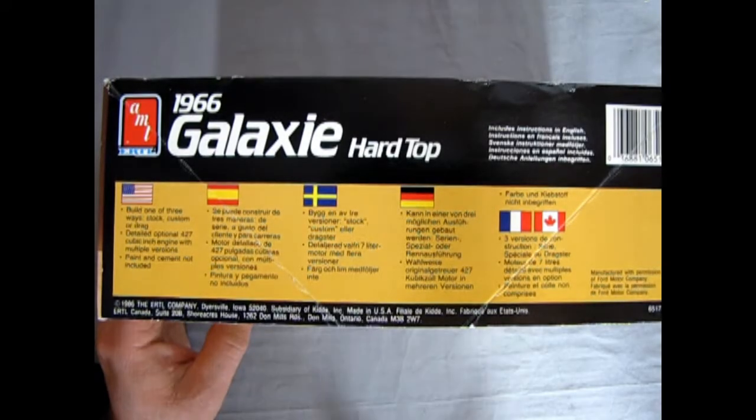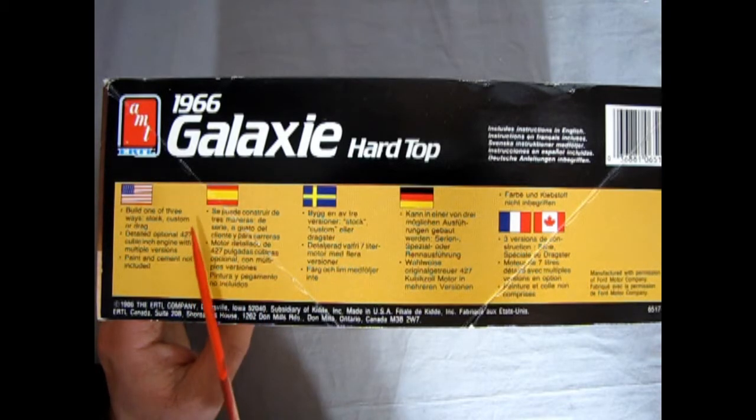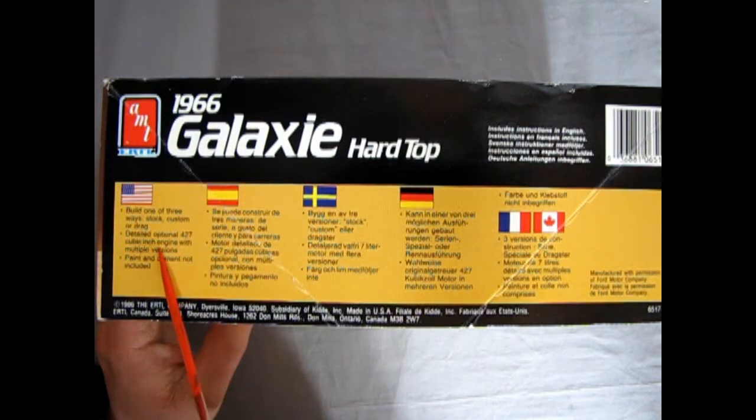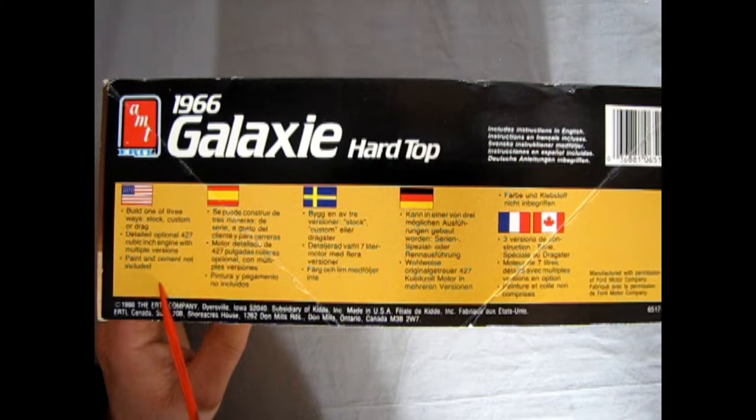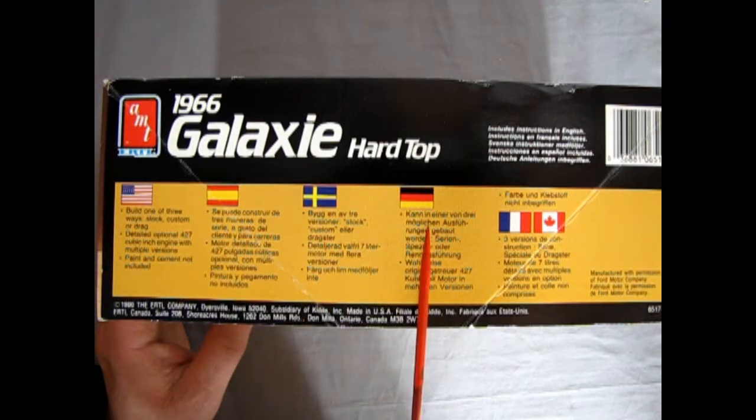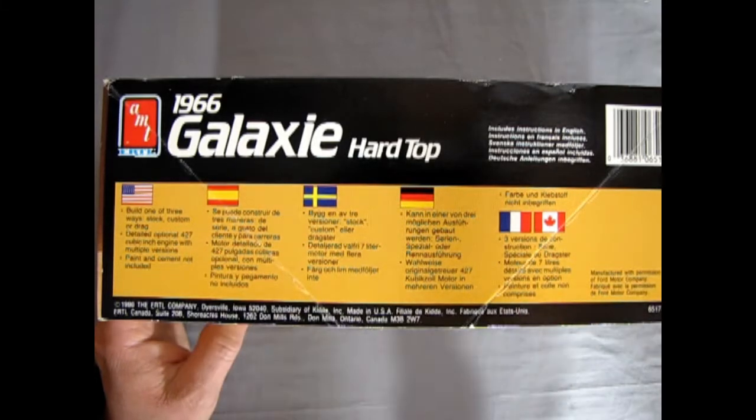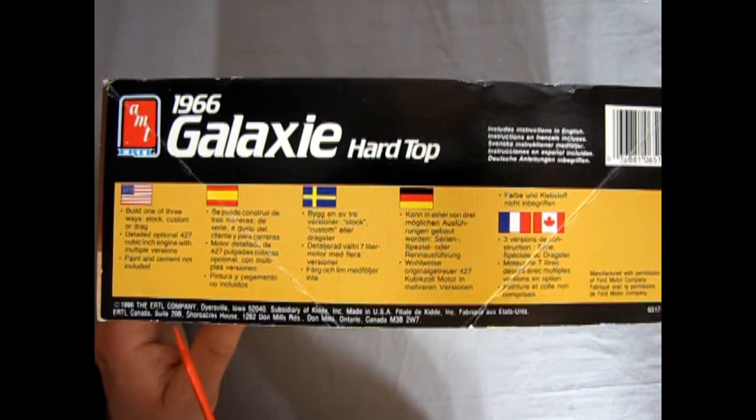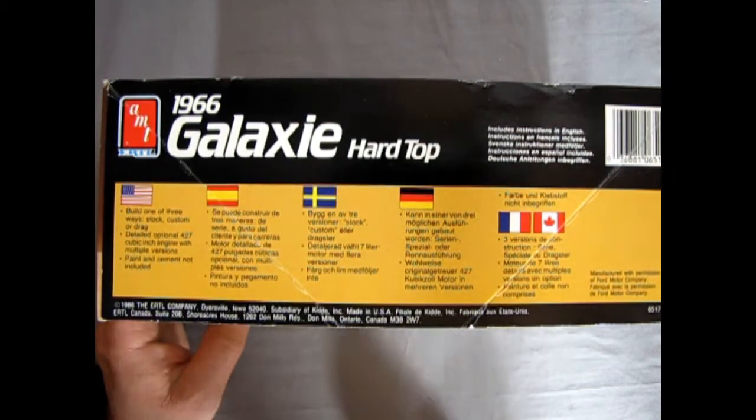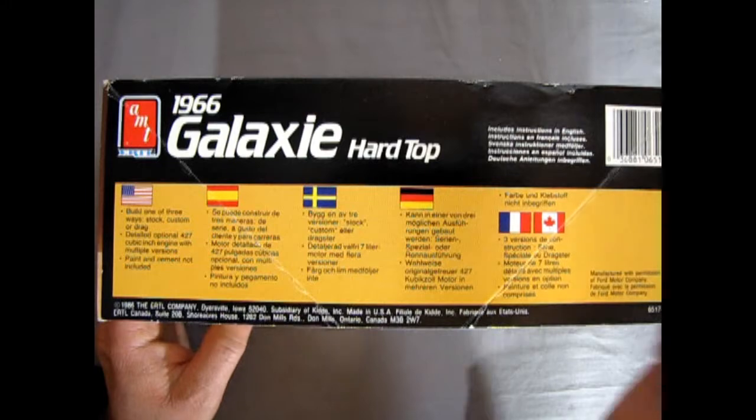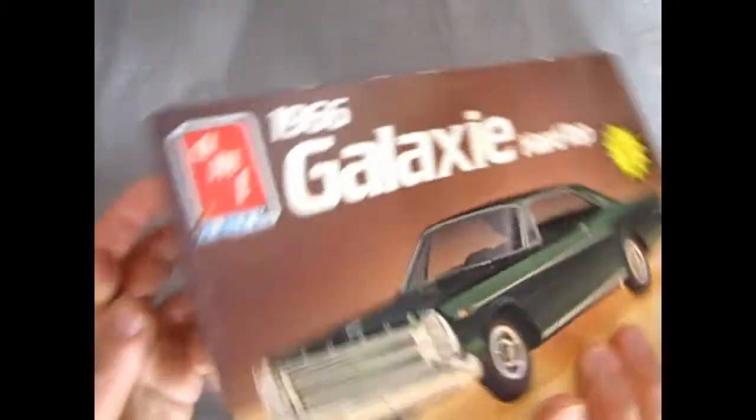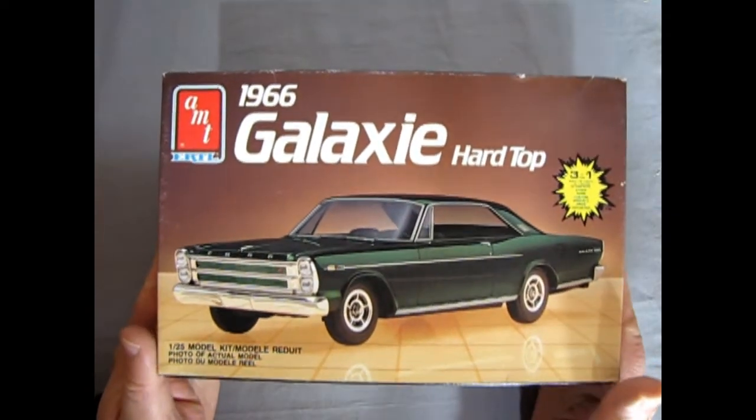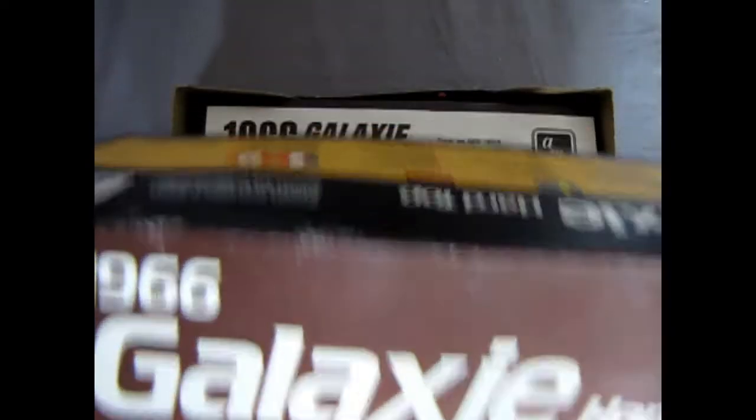As well as the big 427 induction hood. Sort of very similar to the Ford Thunderbolt. Now, let's back the camera out again. I'll just play this up on the side. There you can see our 66 Galaxy model again. And then over around here, we get, of course, the American English. So it says, build one of three-way stock customer drag. Detailed optional 427 cubic inch engine with multiple versions. Paint and cement not included. And then you get Spanish, Swedish, German, and French Canadian. Is there a date on this thing? 1986. The AMT Ertl Company. So, of course, this is an old one. There's our Galaxy. Now, let's open up the lid on this nice machine and see what is inside it.